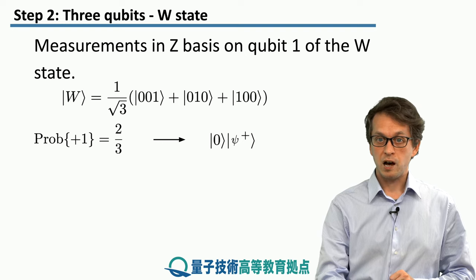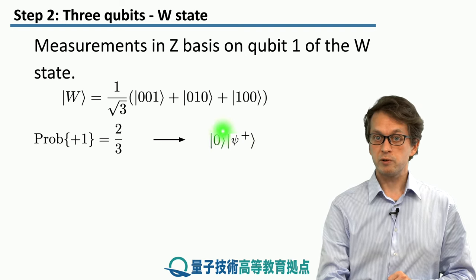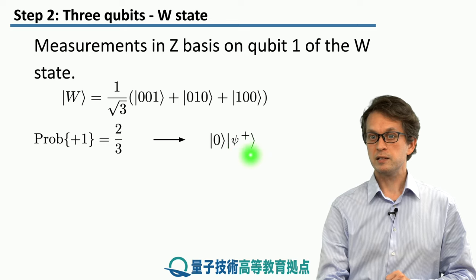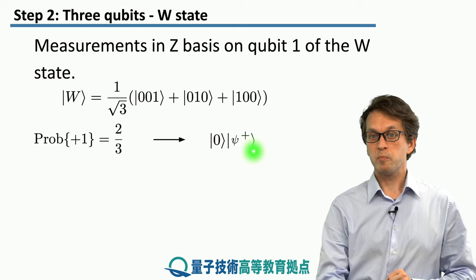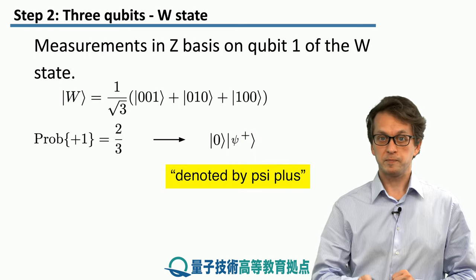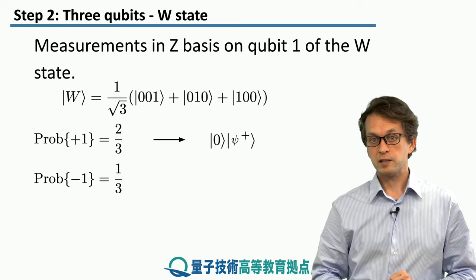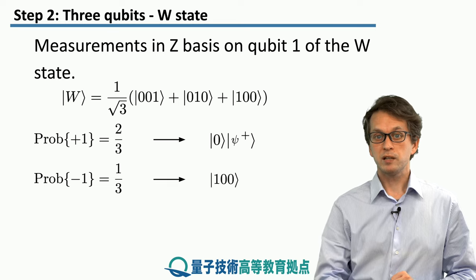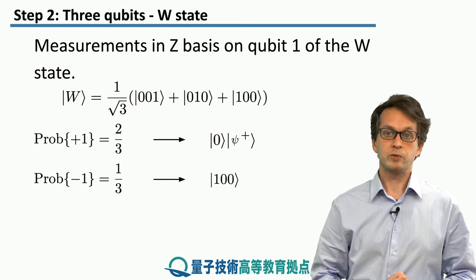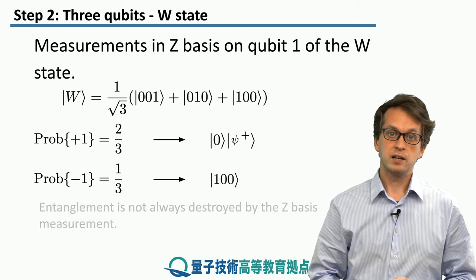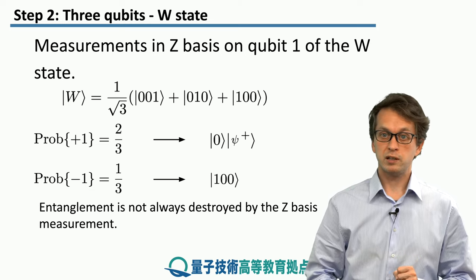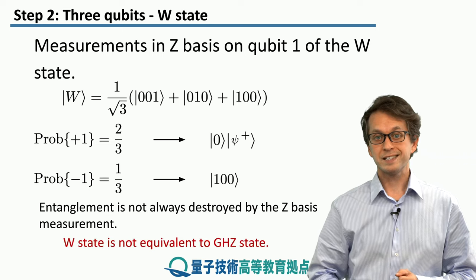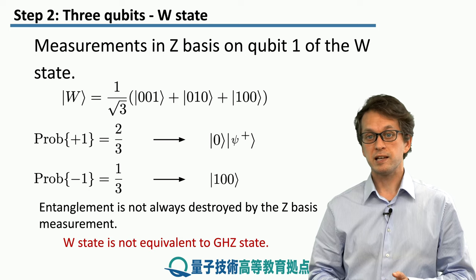When the plus-one outcome occurs, qubit 1 is projected onto state |0⟩, but the remaining two qubits — qubits 2 and 3 — remain in an entangled state, specifically sharing the maximally entangled Bell pair Φ+. The other outcome, minus one, can happen with probability one third, and then we end up in the separable state |100⟩. So unlike the GHZ state, here we don't necessarily always destroy the entanglement initially present in the system. In this sense, the W state and GHZ state are not equivalent.